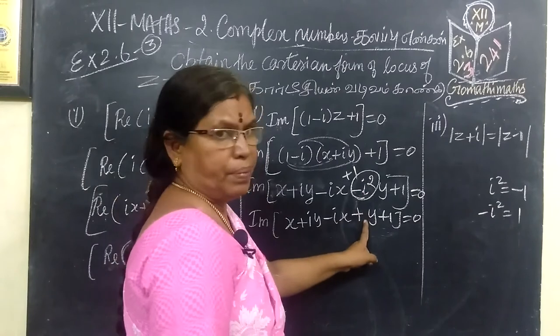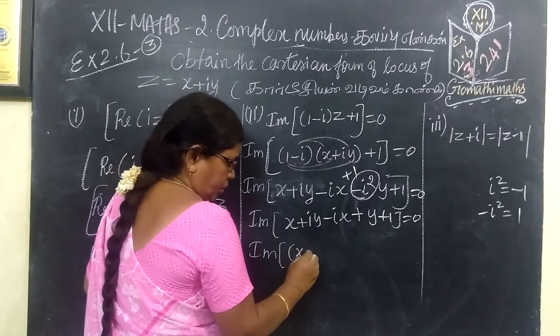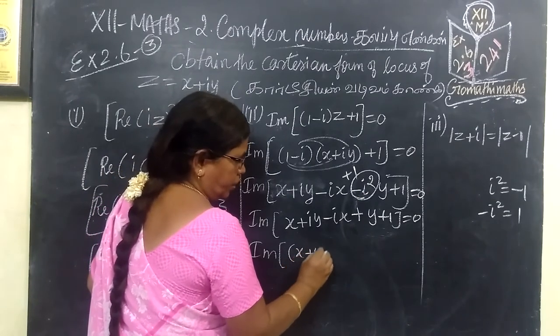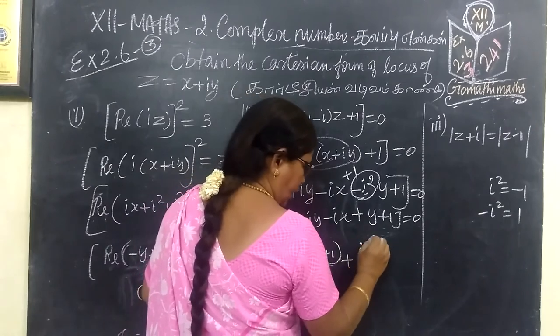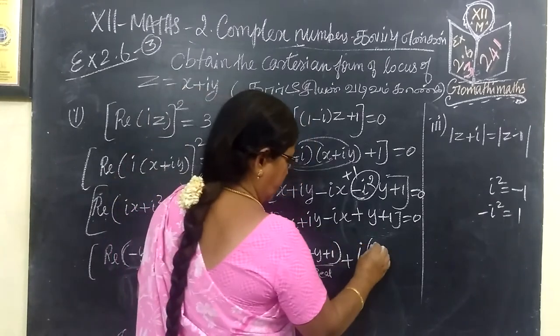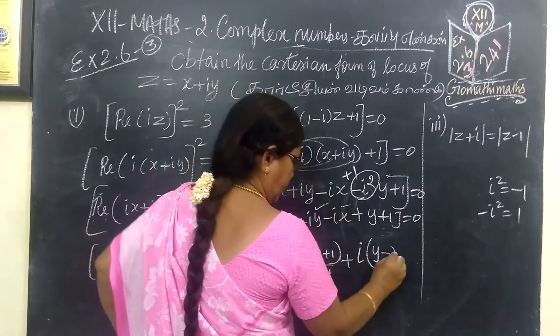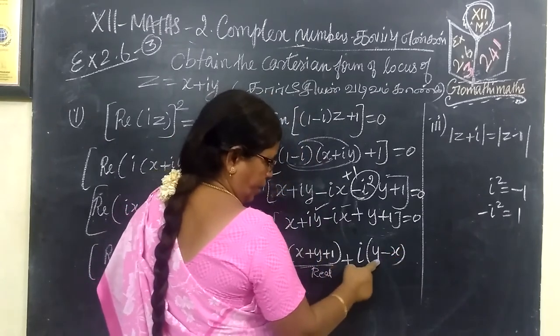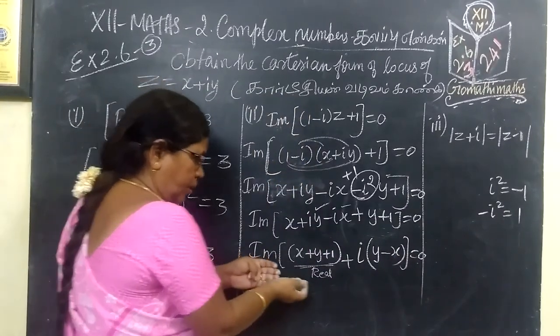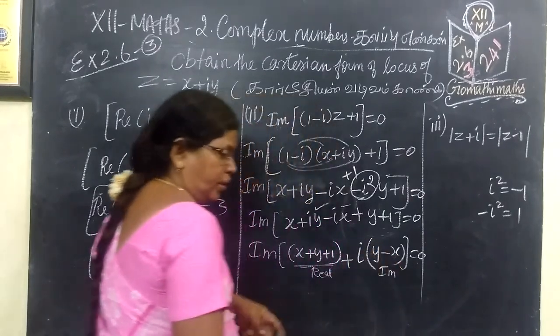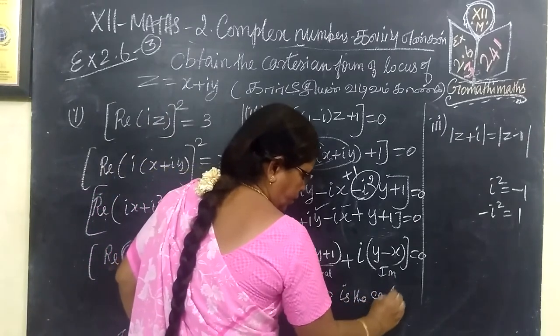So, here, imaginary of, first we collect. Minus i² plus 1 plus 1. So, imaginary part. First, real part. I just put it together. Imagine of x and y, I'll hold. Then x, then y and 1. Imaginary part equal to zero. You are collecting imaginary part. Y minus X equal to zero.